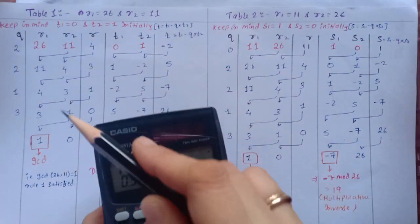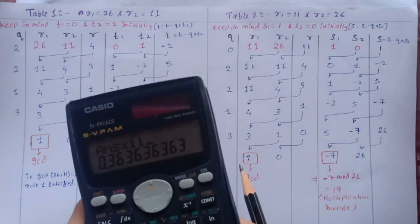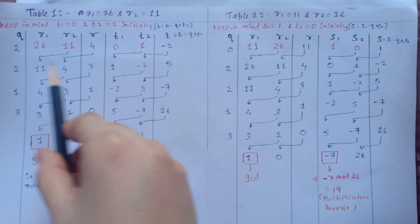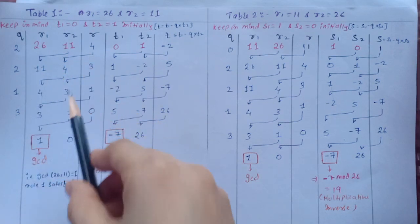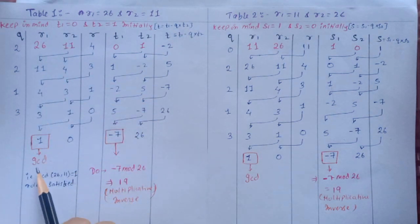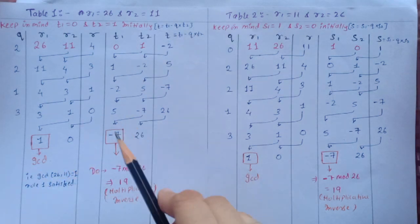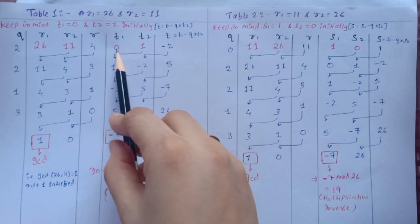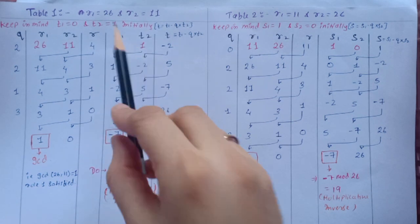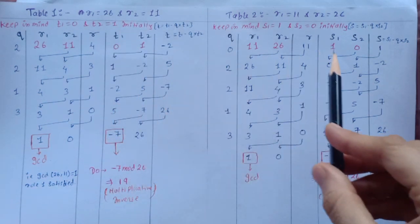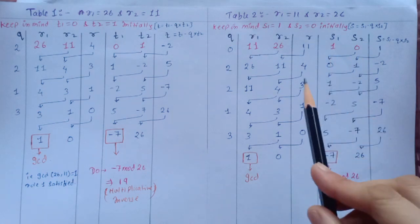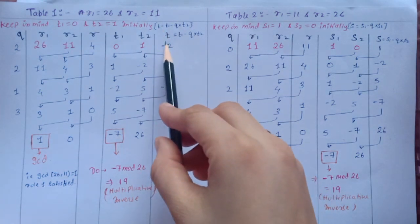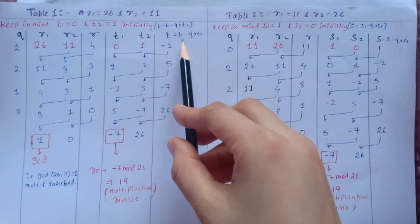Then this term shifts here, this term shifts here, and similarly we calculate until gcd, we get gcd. Now initially t1 is 0 and t2 is 1. Similarly we keep initially s1 as 1 and s2 as 0, and we go on calculating. To calculate t, t is equal to t1 minus q into t2.